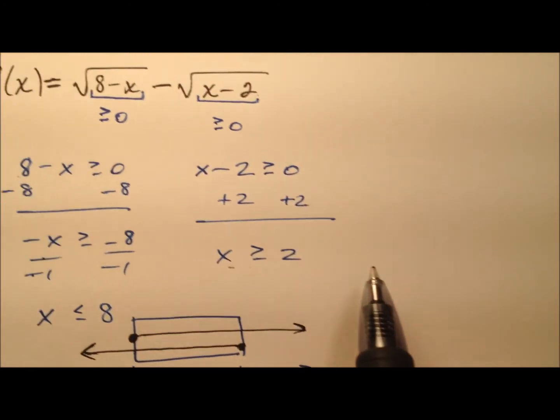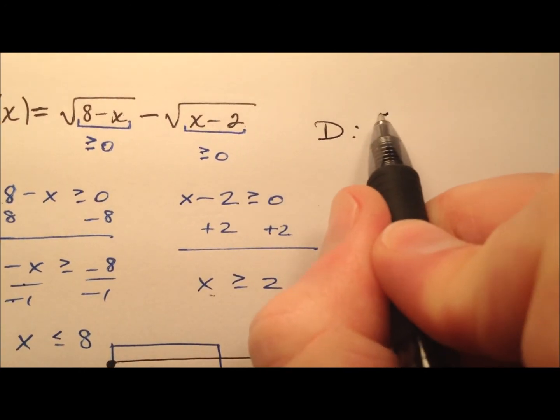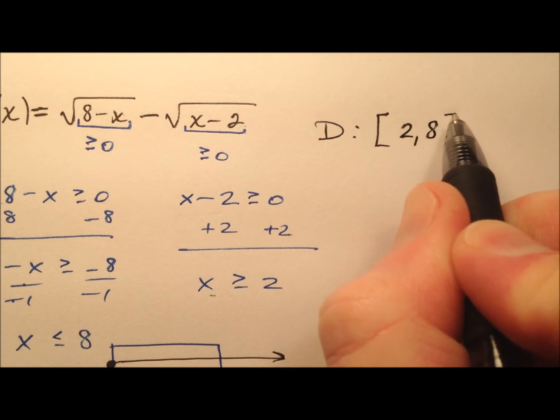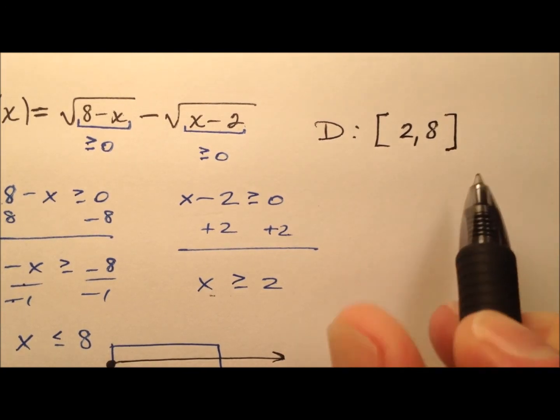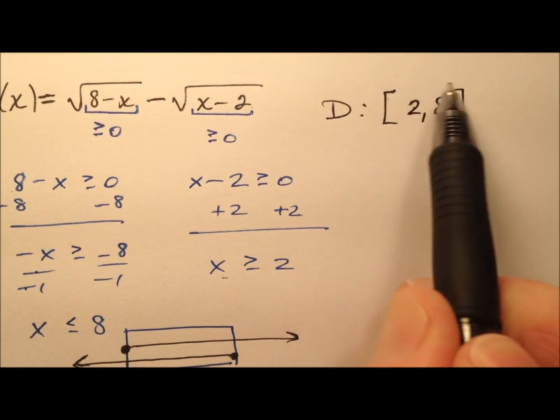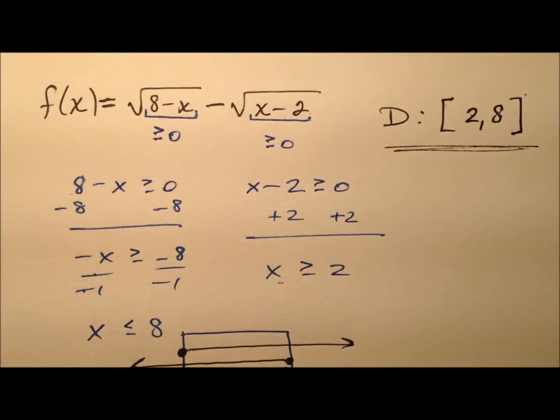So for this function, this f of x, we can say the domain is going to be, and we'll write it in interval notation. So bracket 2 comma 8 and close that bracket. And again, this just means we're going all real numbers from 2 to 8 and the brackets indicate that we are including those endpoints 2 and 8.